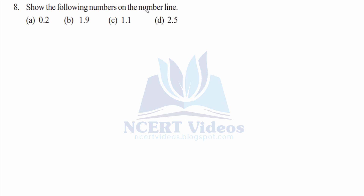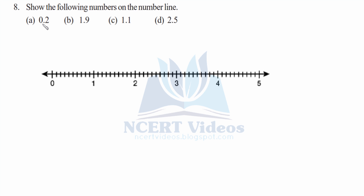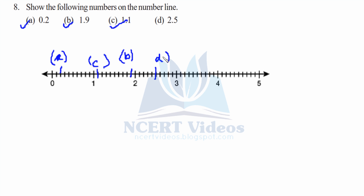Question 8: Show the following numbers on the number line. We are given four numbers to represent. 0.2 would be at the second division: 0.1, 0.2 — here is part A. 1.9 would be only 0.1 distance apart from 2, so it is marked near 2 — that is part B. 1.1 is closer to 1 — there is 1.1. 2.5 falls right between 2 and 3. That completes question 8.